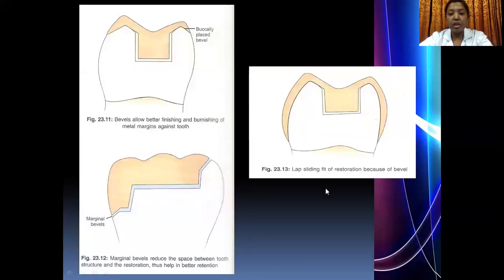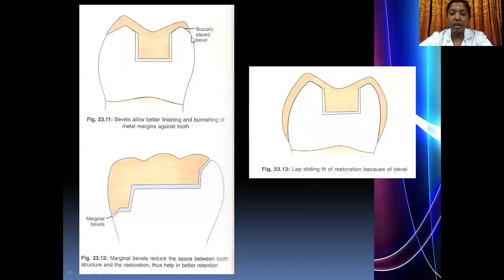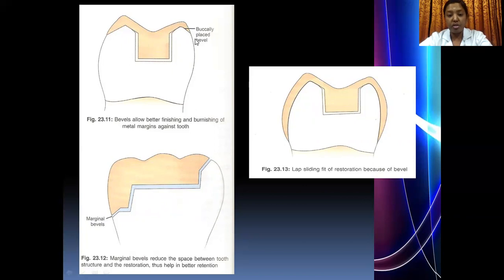In tooth preparation, certain important things must be kept in mind. Bevels are placed on the cavosurface margin for an inlay or onlay. This beveling on the cavosurface margin allows a thin margin of metal to overlap or encompass the tooth structure, thereby strengthening the remaining tooth structure. Bevels are given on the occlusal cavosurface margin as well as the gingival margin.